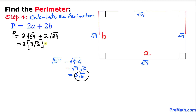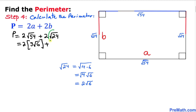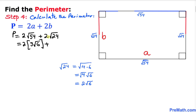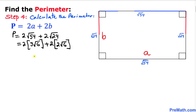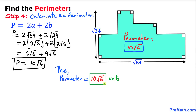Now focusing on square root of 24: this simplifies to 2 times square root of 6. So 2 times square root of 24 can be replaced by 2 times 2 times square root of 6. Simplifying: 2 times 3 gives 6 root 6, and 2 times 2 gives 4 root 6. Combining like terms: 6 root 6 plus 4 root 6 equals 10 times square root of 6.